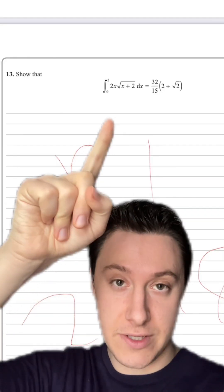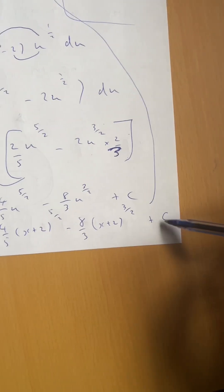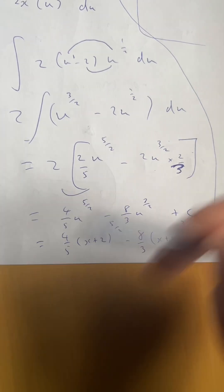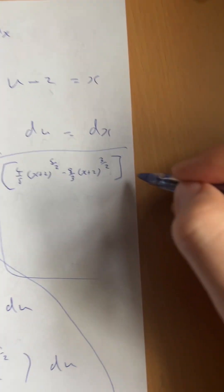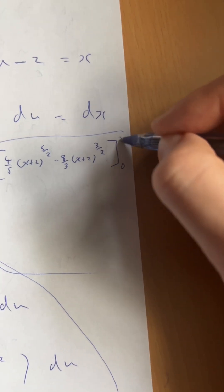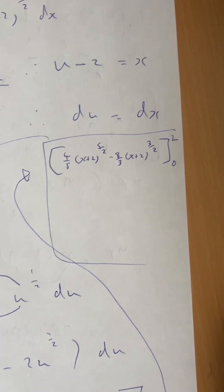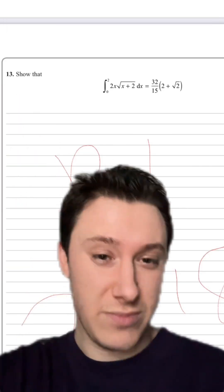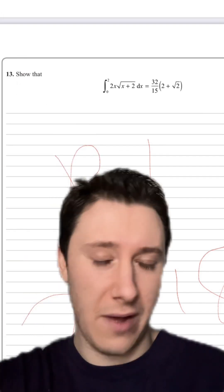As I said, we've got limits in this question from zero to two. You just drop the plus c since we have limits. I'm going to rewrite this integral in a box with the limits of zero and two — plug in two, plug in zero, subtract them, and you'll get your final answer. You can do that yourselves — it's just indices and surds, like GCSE maths. I'm not going to go through that in this video, but if you get stuck, just let me know.